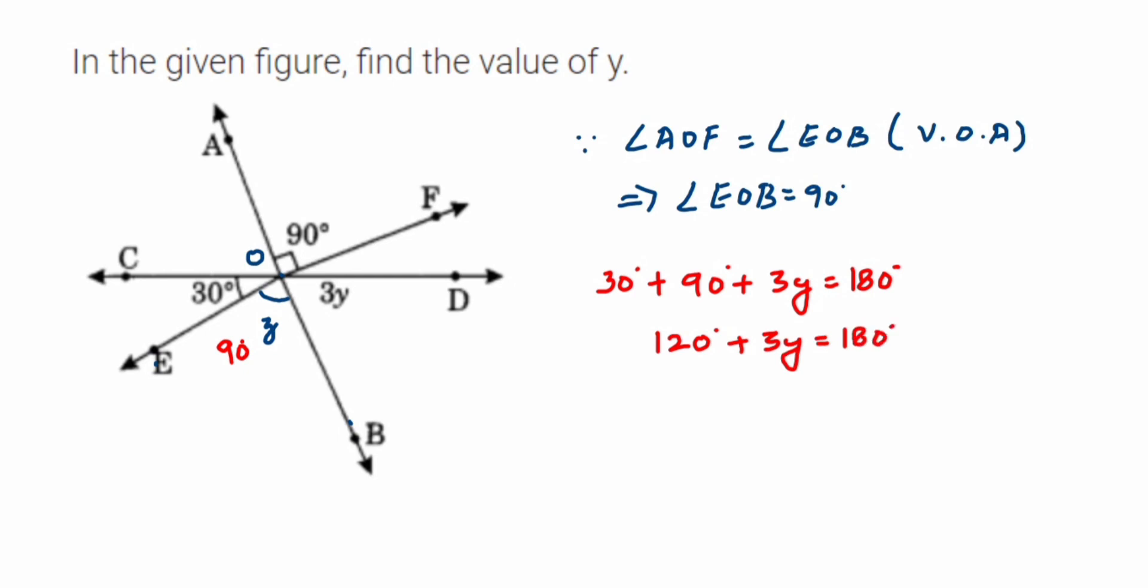So 120 degrees plus 3y is equal to 180 degrees. We'll bring constants to one side. I'm going to transpose 120 to the right hand side, so 3y is equal to 180 degrees minus 120 degrees, which is 60. So 3y equals 60 degrees.